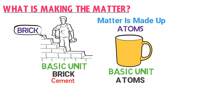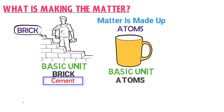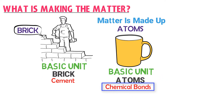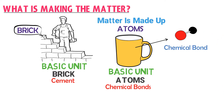We know that there is cement holding together all the bricks of a wall. Similarly, as this cup or matter is made up of millions of atoms, what is holding those millions of atoms together? Just like cement holds bricks, there is a chemical bond that holds together all the atoms of the cup or matter. One can say that there exists a chemical bond between two atoms.